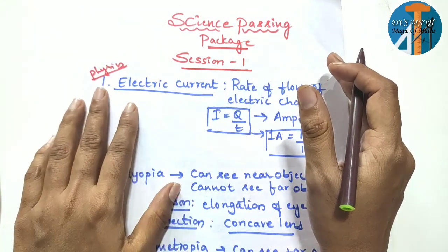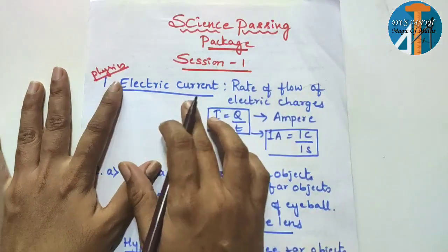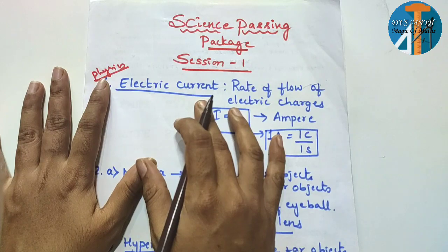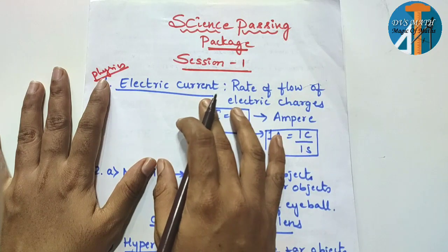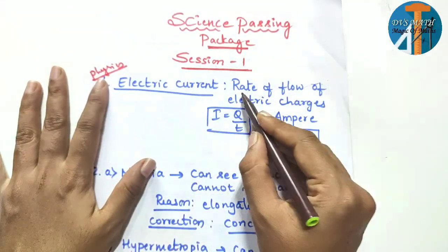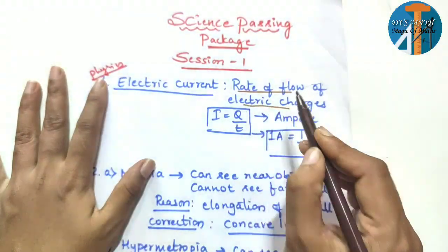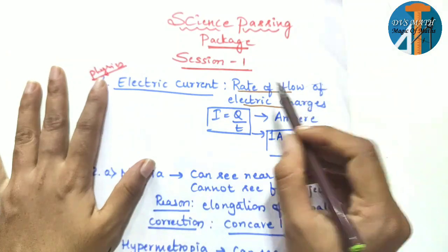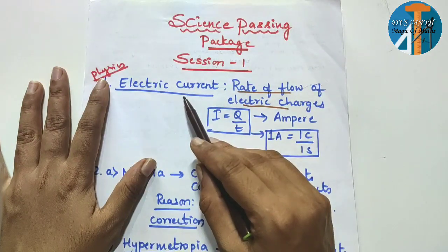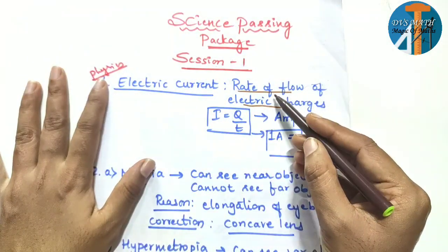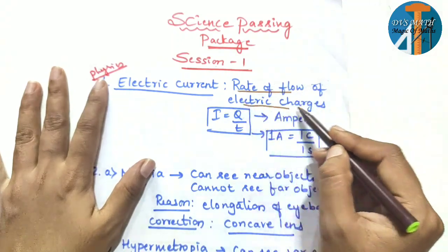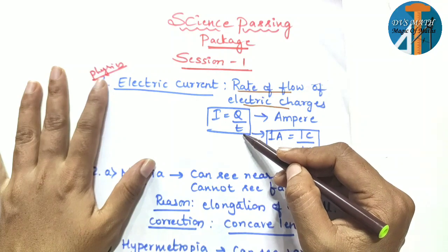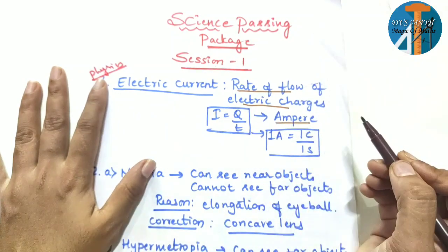So in physics, the first question is electric current — this is the definition. What is electric current? What do you mean by electric current? Rate of flow of electric charges. So this will be the definition for electric current. The formula is I is equal to Q by T.